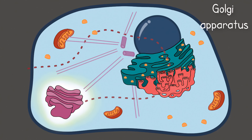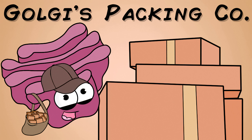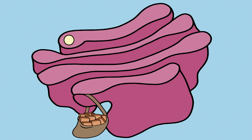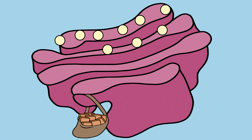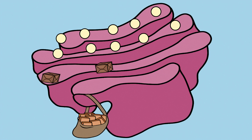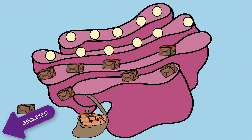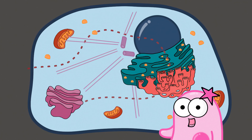Next, the Golgi apparatus — it's the ultimate packaging center. It can receive items from the transport vesicles that pinched off the ER. It has enzymes that can modify and sort the molecules it receives. It can determine where to send those molecules, including some that may eventually be sent to the membrane so they can be secreted — meaning items sent out of the cell.